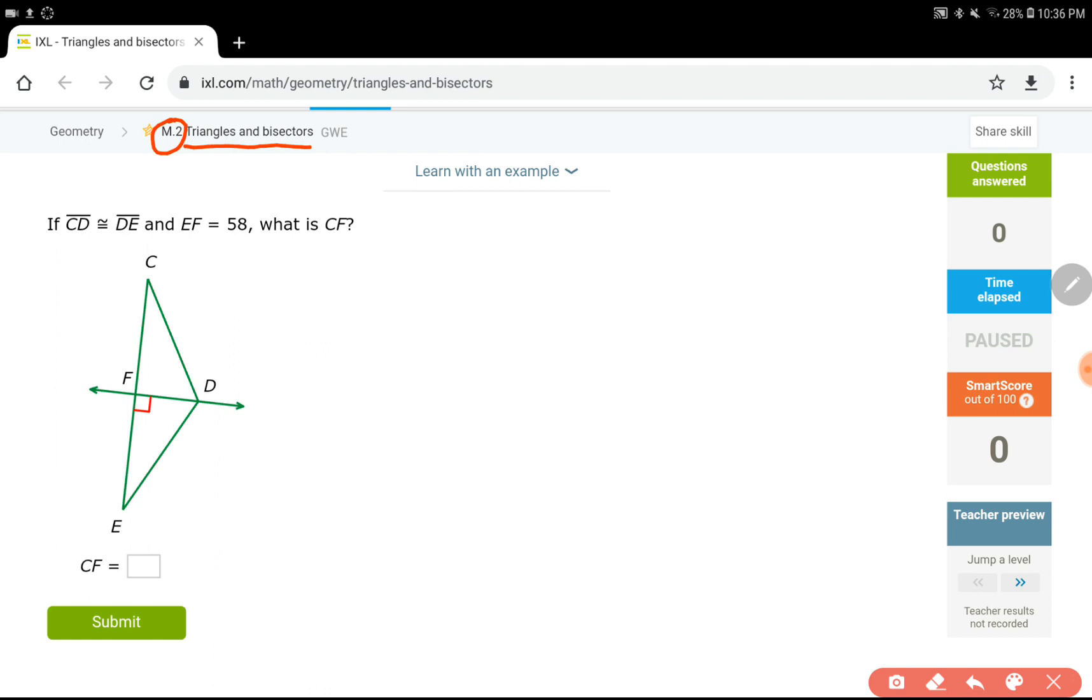This week is going to be dedicated to triangles. Let's see what to do when we have angle bisectors or just bisectors that cut the sides into equal pieces. For this question, we have segment CD congruent to DE.